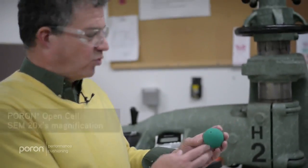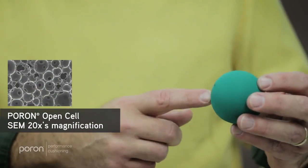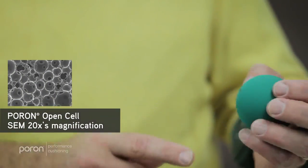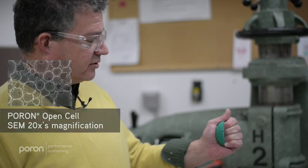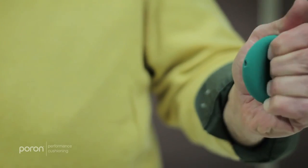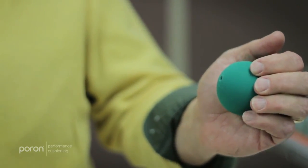An open cell foam is more like this racquetball ball that I've drilled a hole in. When you squeeze it, the air goes out of the cell, and when you let it go, the air can easily go back in.